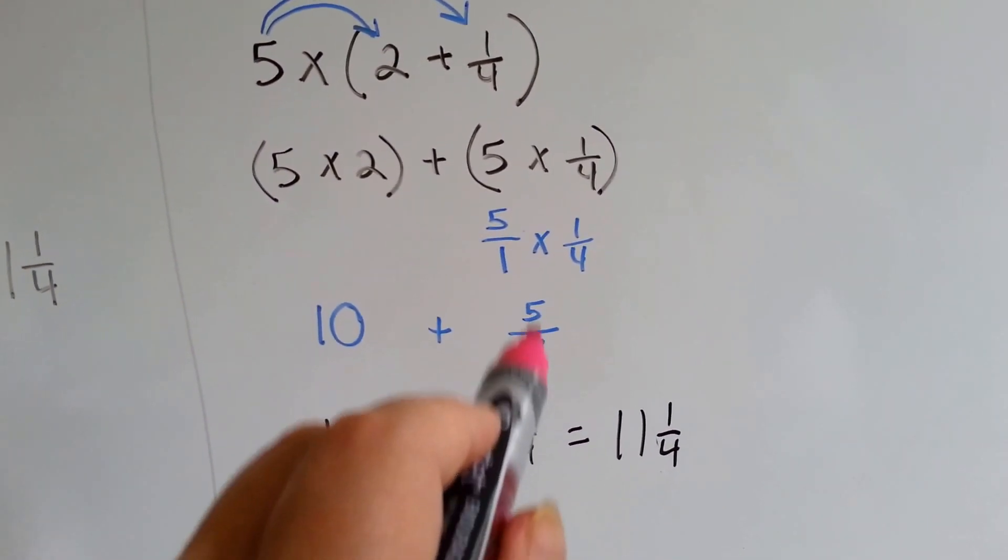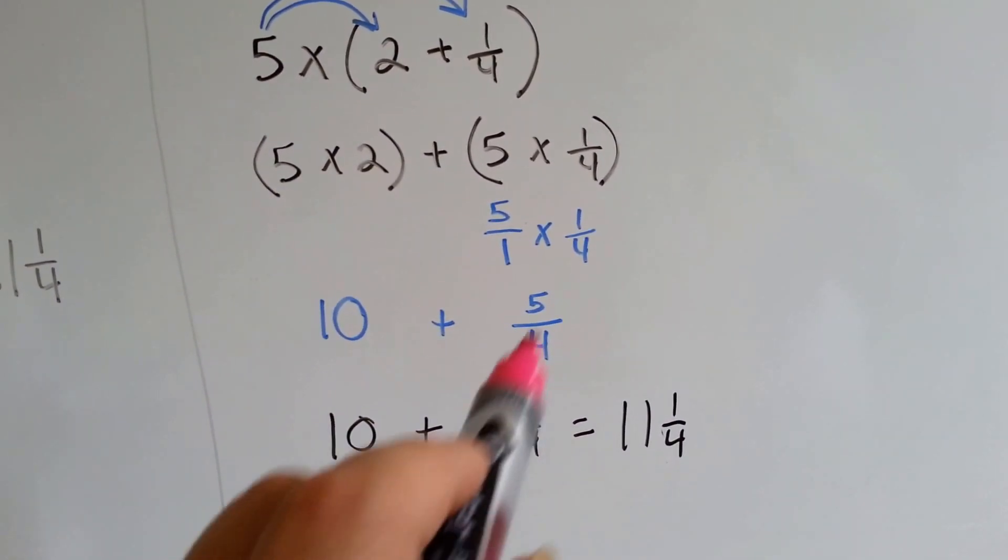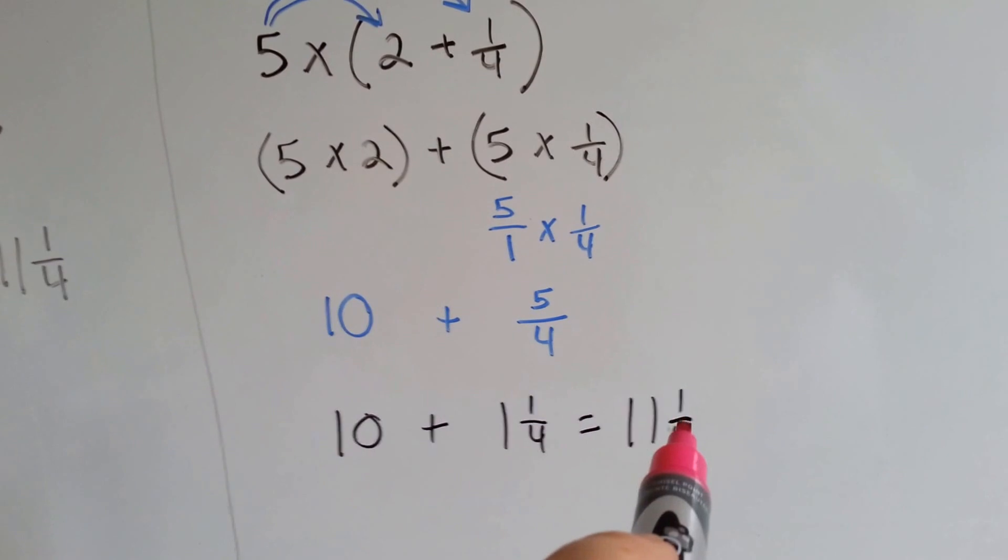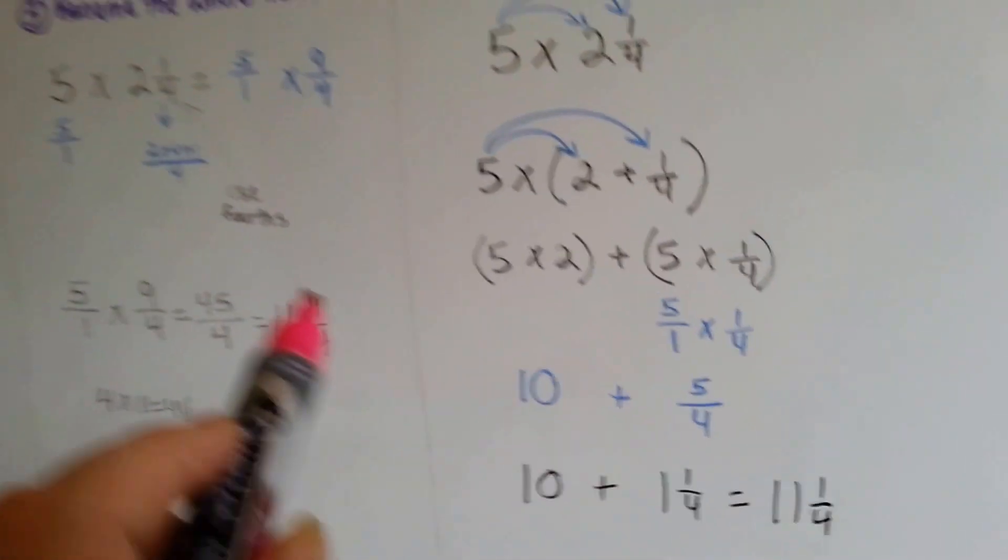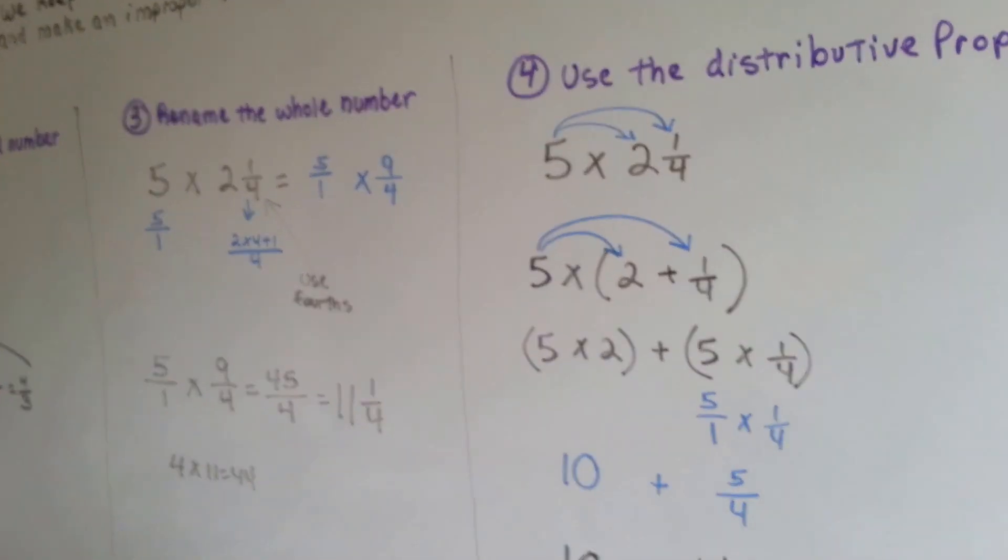This is an improper fraction that can get 4 fourths out of it, so we have 1 and 1 fourth. We add them together and have 11 and 1 fourth, just like we did when we renamed the whole number.